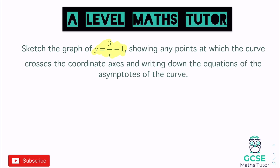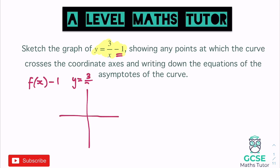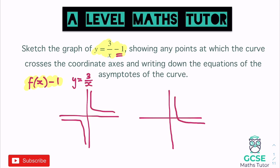From graph transformations, changing the y-value — that minus one at the end — affects the y-coordinate and moves the graph down by one. So I'll first sketch y = 3/x, which goes in the usual two quadrants. Then applying the transformation of minus one at the end, the graph shifts down by one: the top-right part dips below the x-axis, and the bottom-left part moves down as well.